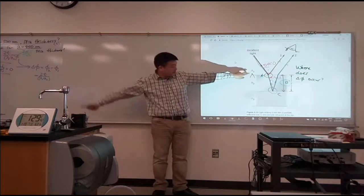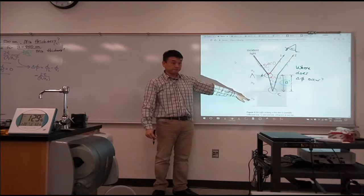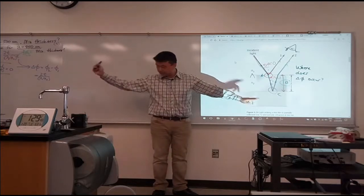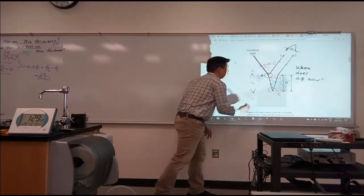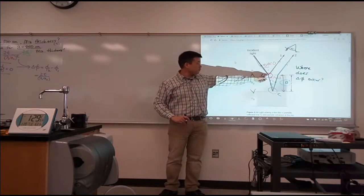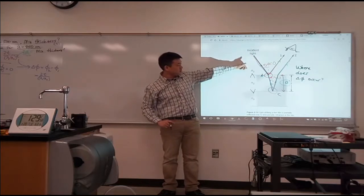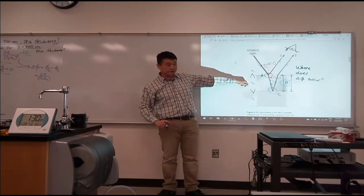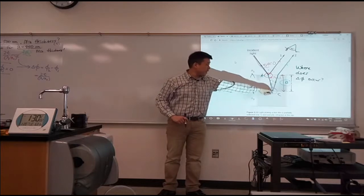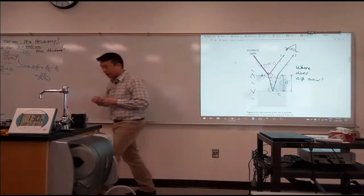And the way I have it set up there, N3 is smaller than N2, right? 1.33 is smaller than... So here you have two different types of reflections. Here you have reflection from smaller index of refraction to larger index of refraction. Here you have reflection from larger to smaller index of refraction.